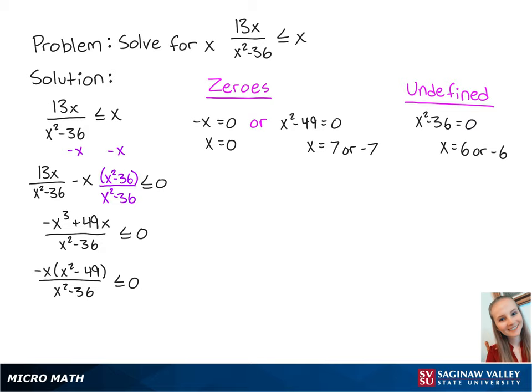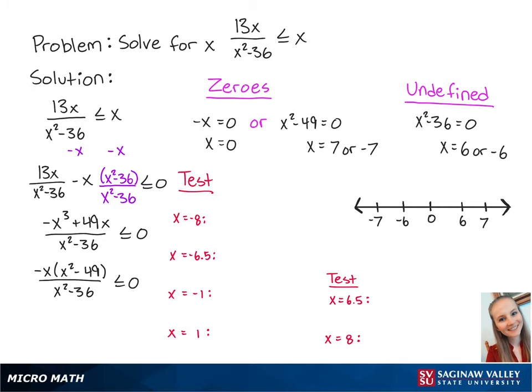Now, we're going to use this number line to find the values of x that make the inequality a true statement. We're going to do this by plugging in values of x from each region. For x equals negative 8, we have 30 sevenths. Since this number is positive, this means that x values less than negative 7 will make the left side of the inequality positive.